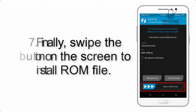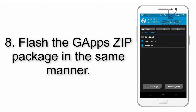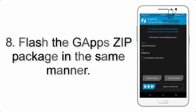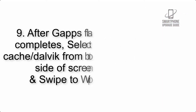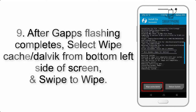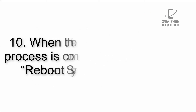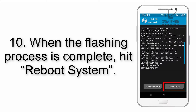Step 7: Swipe the button on the screen to install the ROM file. Step 8: Flash the GApps zip package in the same manner. Step 9: After GApps flashing completes, select Wipe Cache and Dalvik from the bottom left side of the screen and swipe to wipe.